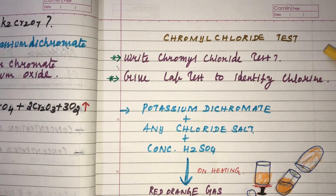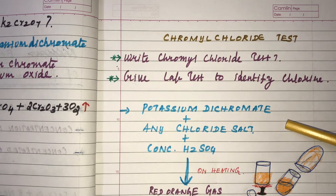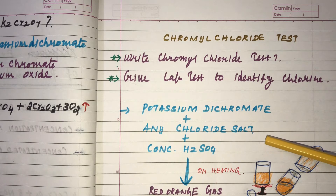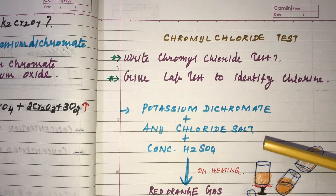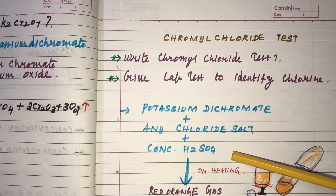The Chromyl Chloride Test is one of the lab tests to identify chlorine by using Potassium Dichromate. Potassium Dichromate is taken along with the chloride salt to be tested, and it is added with concentrated Sulphuric Acid.